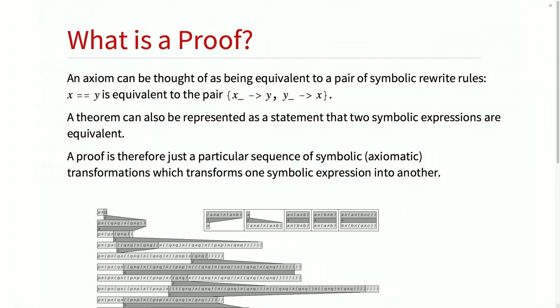Let me now explain what these proof objects really mean, which requires explaining what FindEquationalProof is doing internally. From a fundamental meta-mathematical point of view, an axiom of the form X equals Y can be thought of as a pair of symbolic transformation rules: if you have an expression that looks like X, you can replace it with Y, and vice versa. A theorem saying 'prove A equals B' is really just the statement that there exists some sequence of axiomatic transformations starting from A that terminates at B. The proof is that particular sequence.